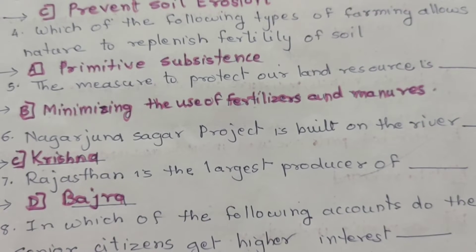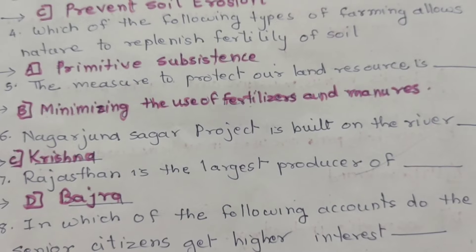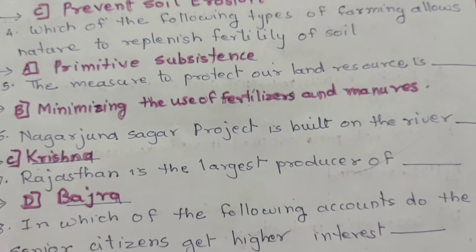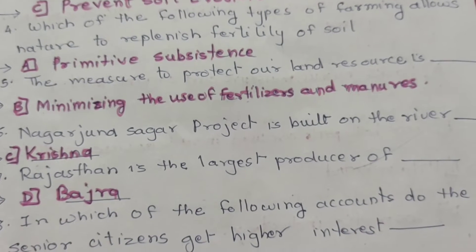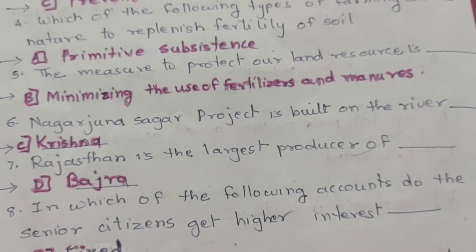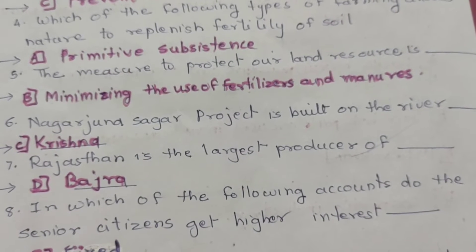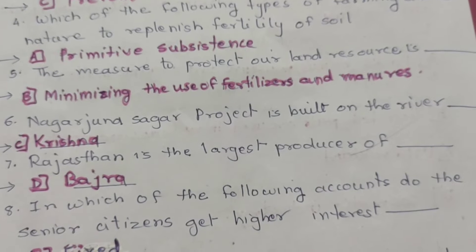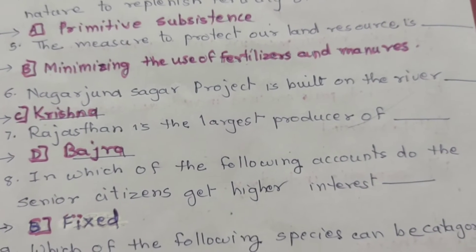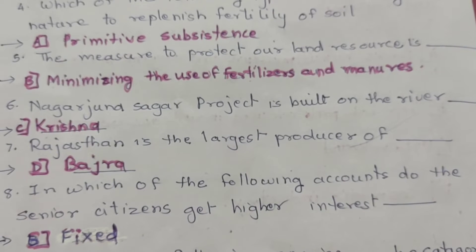Question 6: Nagarjuna Sagar project is built on which river? The correct option is C — Krishna. Question 7: Rajasthan is the largest producer of — the correct option is D — bajra.